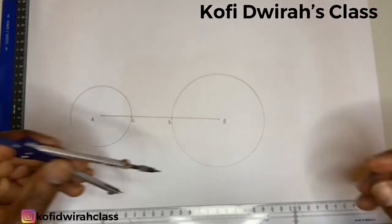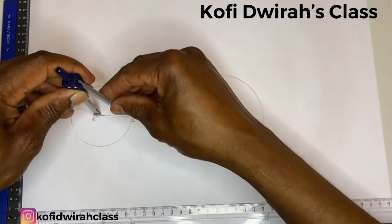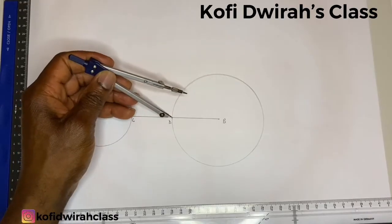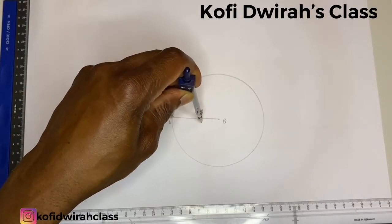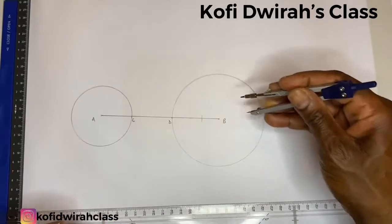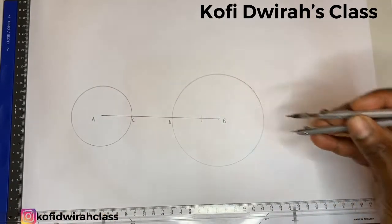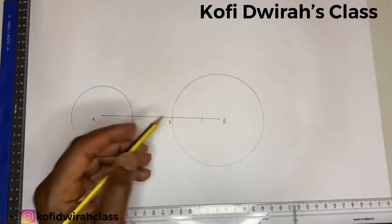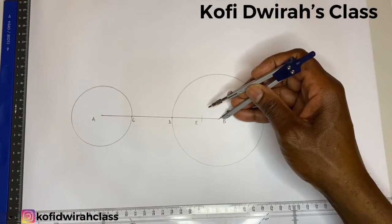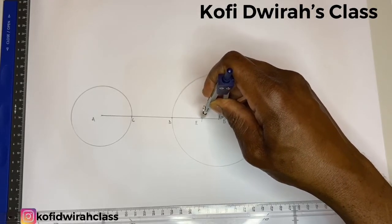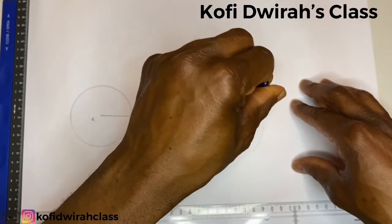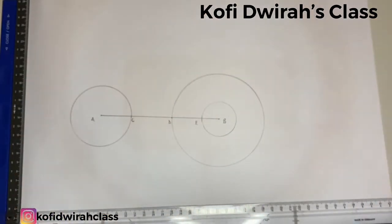Then you measure the radius of the smaller circle — that is AC. Then at point D you mark DB. So we have points A, B, C, D. Then we have this point to be point E. At point B, you open the compass to point E, then you draw a smaller circle.